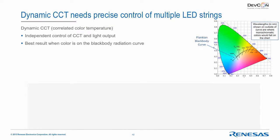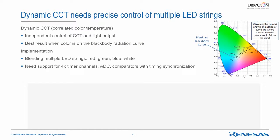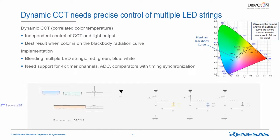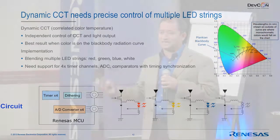This translates to dynamic CCT — correlated color temperature. Based on the black body curve (the color of natural light), as brightness changes, color also changes — that's what sunlight does. The ideal implementation follows this black body curve. In practice, implementing it requires blending multiple LED strings, synchronizing all of them, using typically four timer channels and four ADC channels — all supported on the RL78I1A.